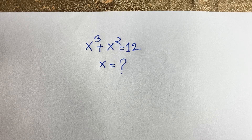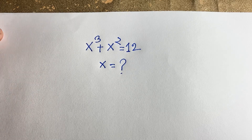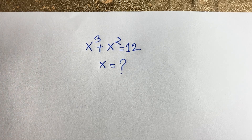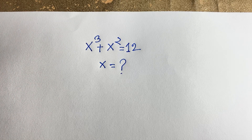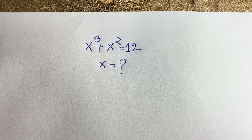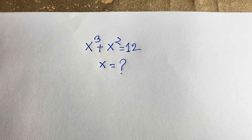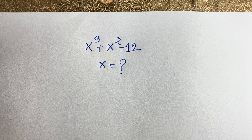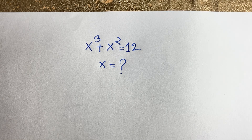Hello everyone. In this video we have solved a nice junior maths Olympiad question. This question is x to the power 3 plus x squared is equal to 12. We have found out what is the value of x in this exponential equation.